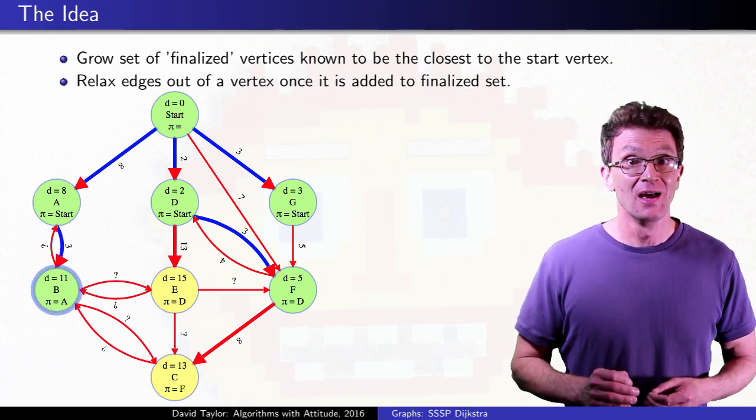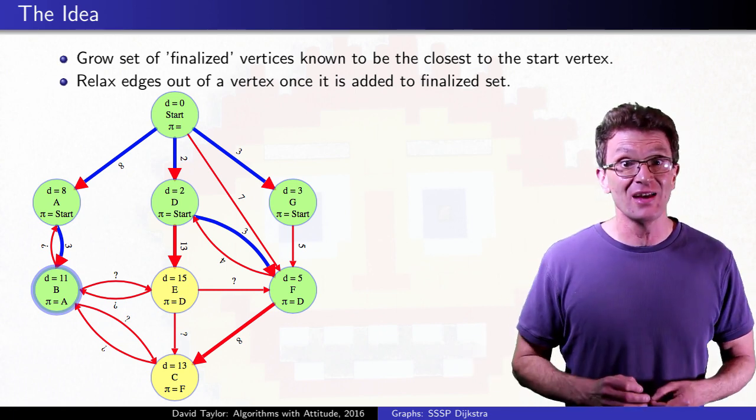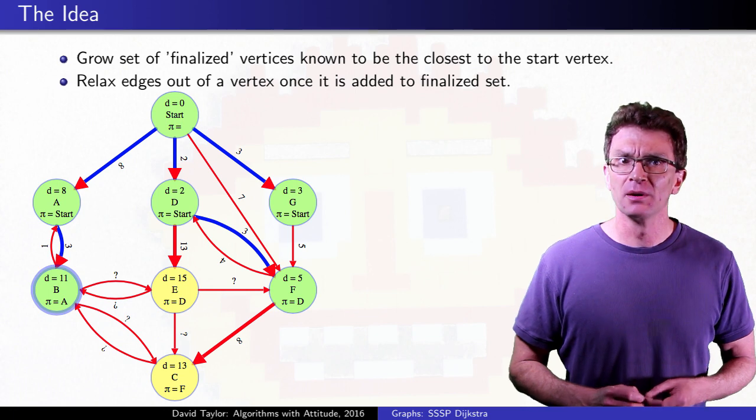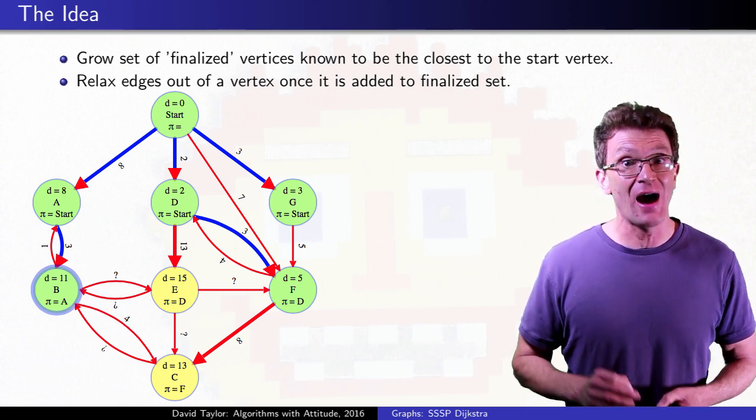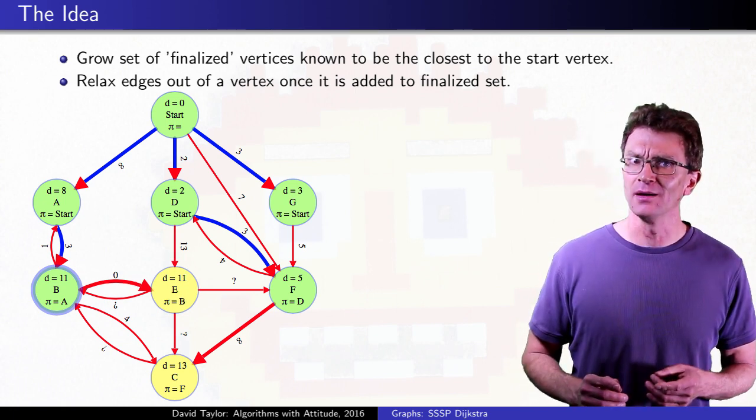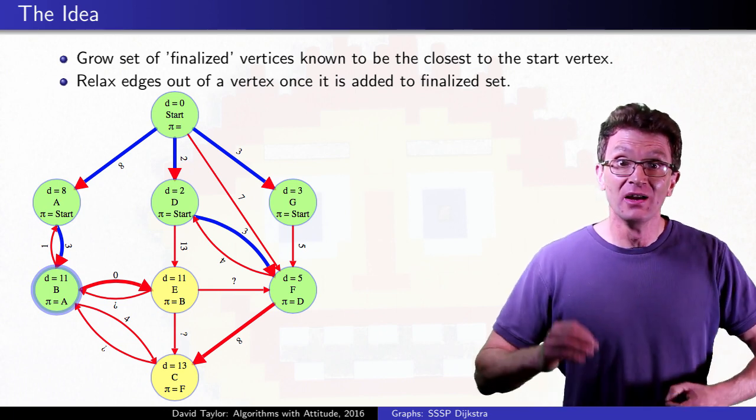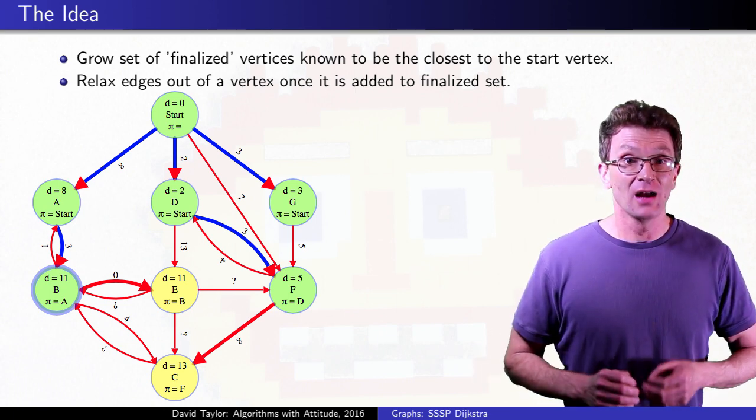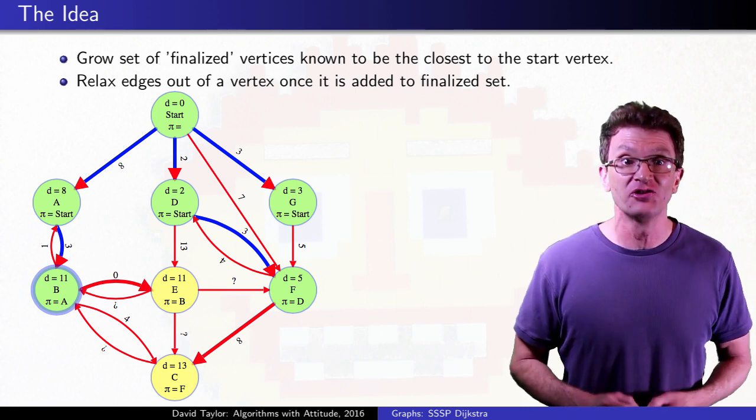Mark B is finished, and now that we know it has its final distance, relax the edges out of it and be done with them. Because B's distance won't change again, relaxing the edges out of it won't help after this first time. Hey, this looks just like where we started, except now 6 vertices are finished instead of 5. The algorithm just fills that logic over and over until the graph is done.